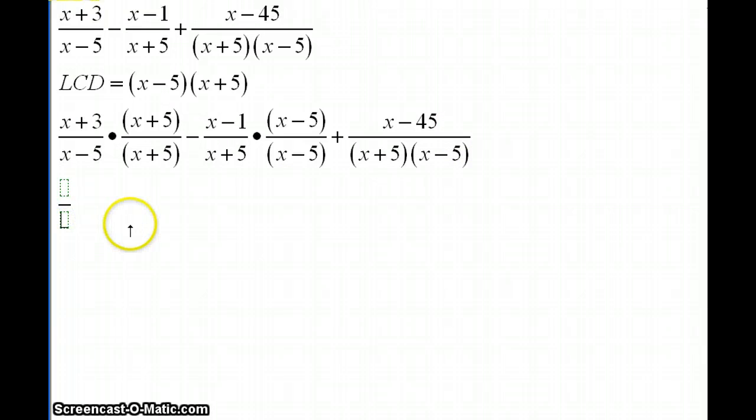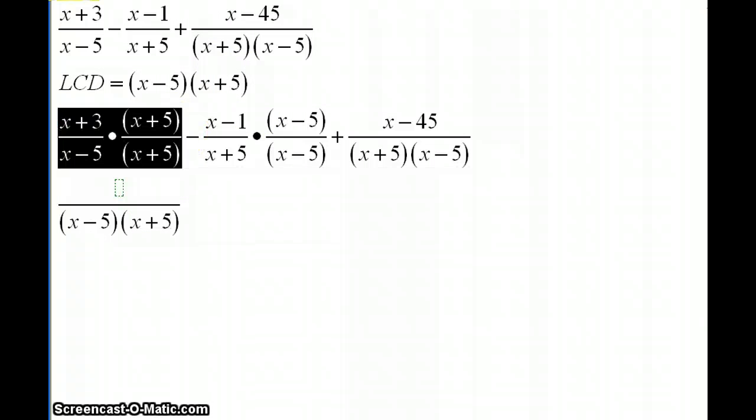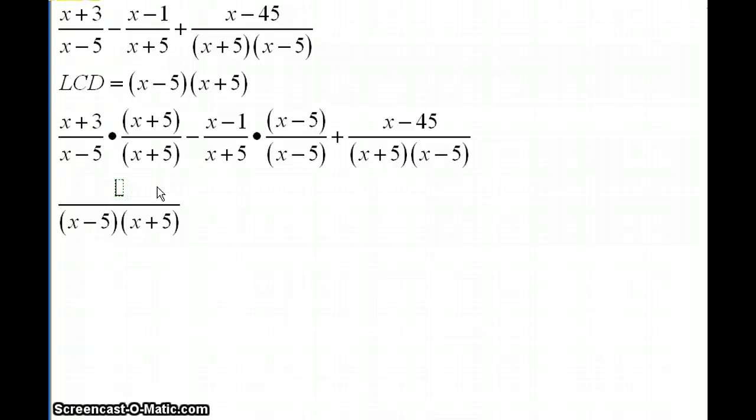I already know my denominator is going to be X minus 5 times X plus 5. And now I'm going to start multiplying here. For example, let me start with this one here. Multiply X plus 3 times X plus 5. And I'm going to do FOIL but I'm going to do it mentally. So X times X is X squared. Then I'm going to multiply 3 times X is 3X. And X times 5, that's 5X. So in total, I'm going to have 8X. And then 3 times 5, that will be 15. So I already did FOIL with these two.